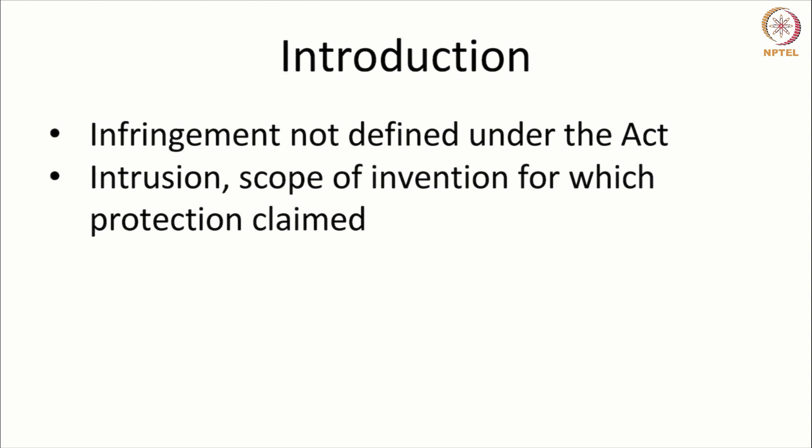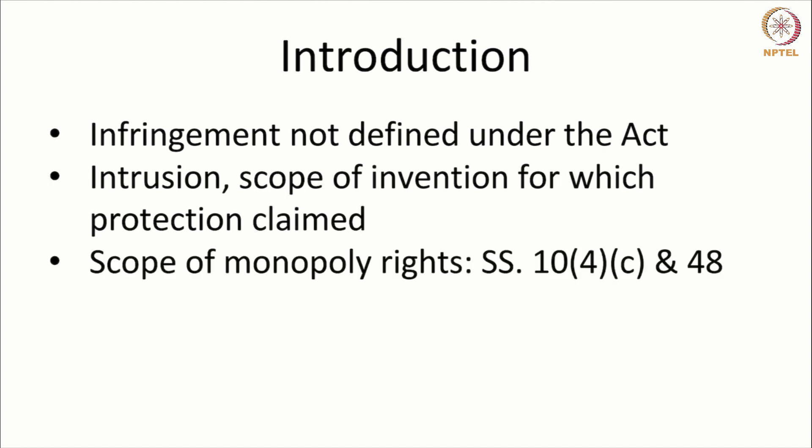This involves principles of claim interpretation — the claim has to be interpreted and understood, and it has to be determined whether the act falls within the scope of the claim. Infringement can only be with regard to rights that are guaranteed to the patentee. A person can only infringe the rights that are protected. The Patents Act, though it does not define infringement, does mention the rights of the patentee in Section 48. In Section 10(4)(c), it mentions that the scope of what is claimed shall be mentioned in the claim itself.